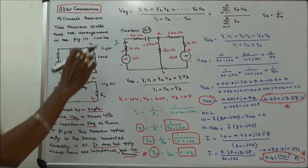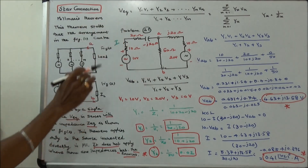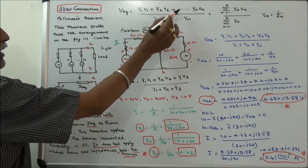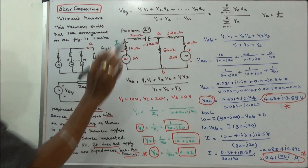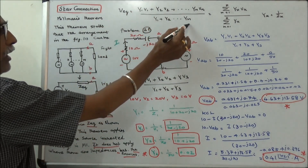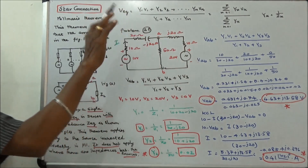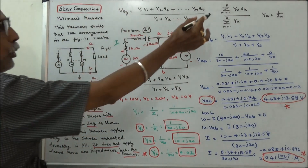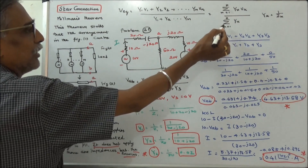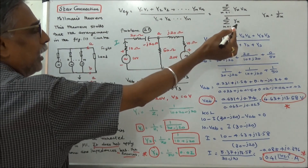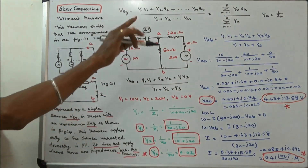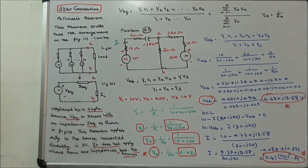V equivalent is equal to Y1 times V1 plus Y2 times V2 plus Yn times Vn, divided by Y1 plus Y2 plus Yn. In general form we can write: sigma k equals 1 to n of Yk times Vk, divided by sigma k equals 1 to n of Yk, where Yk equals 1 by Zk and Y is admittance.